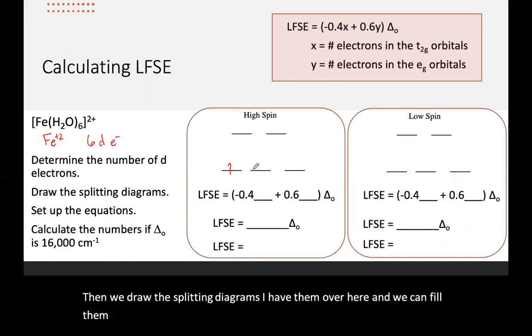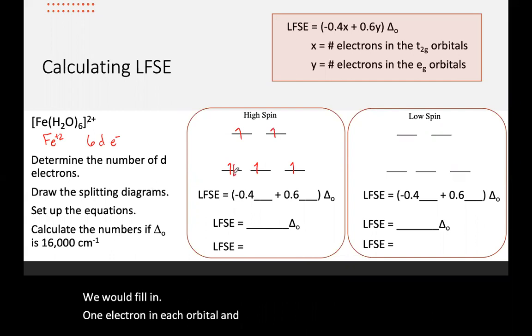I have them over here and we can fill them in. So for high spin, we would fill in one electron in each orbital and then pair one. And for the low spin, we're going to put all of them paired in the t2g orbitals.